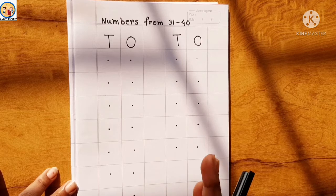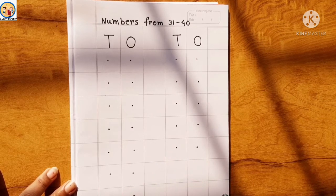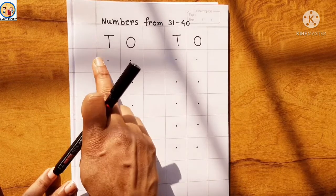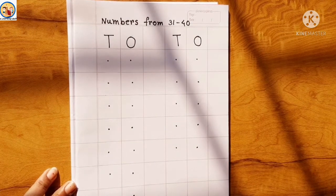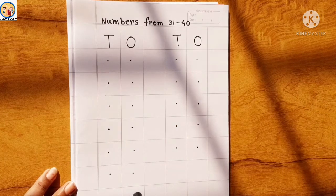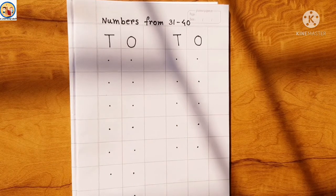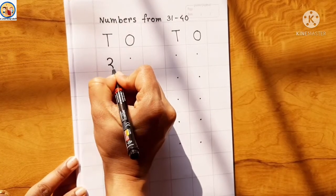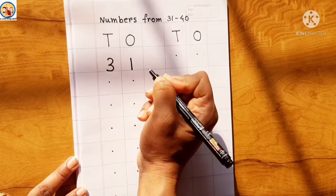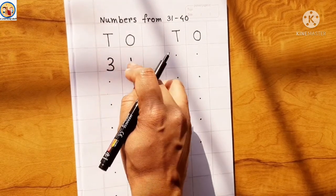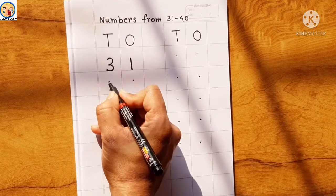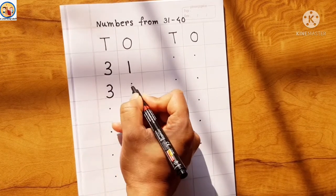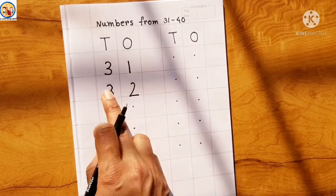To write numbers in a copy, we need to follow a certain format: write numbers from the middle of the box to the bottom line. The first digit is written in the first box and the second digit in the second box. Let's write 3-1, thirty-one — 3 tens, 1 one, it makes 31.